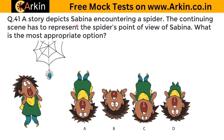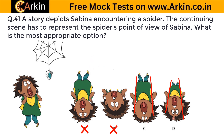The next question: a story depicts Sabina encountering a spider. The continuing scene has to represent the spider's point of view of Sabina. Option A shows no perspective — it's just an upside-down image, so it's wrong. Option B suggests the spider is on Sabina's head looking down, which is also wrong. For C and D, checking the perspective lines — if the spider is far away at a low angle, the perspective converges at a point below. Option D shows the correct perspective image the spider would see. The correct answer is D.